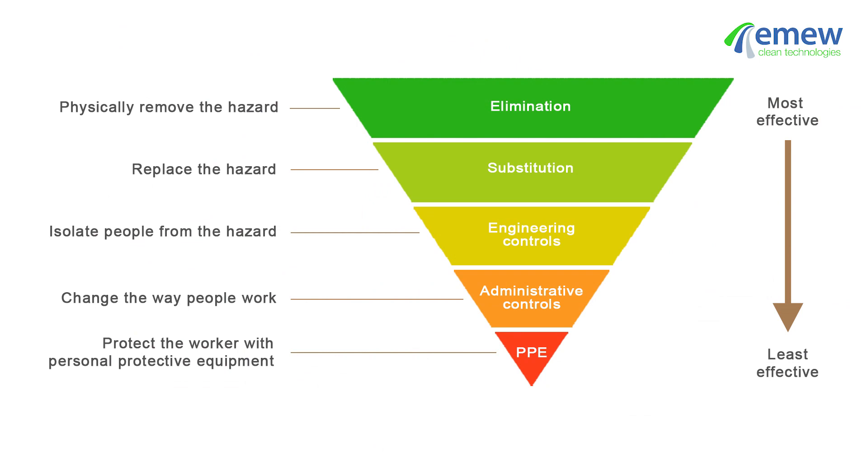Most conventional electrowinning equipment occurs in open baths, creating acid mist. Workers in these plants know firsthand how unpleasant it is to work in these atmospheres, and so they take additional precautions, such as wearing personal protective equipment like full-face respirators, to reduce their risk of exposure. However, in the hierarchy of hazard control, this is the least effective method of control, and should only be used if the hazard cannot be eliminated, substituted, engineered, or administrated away.